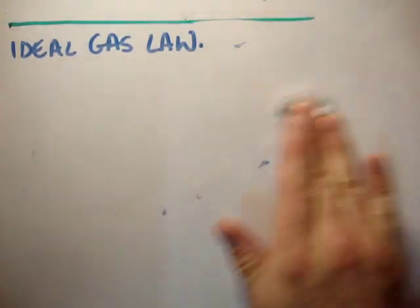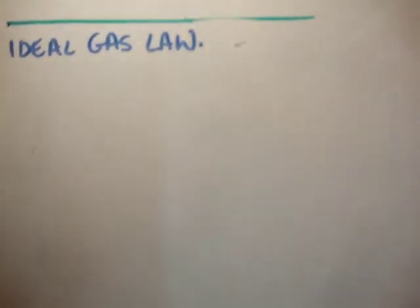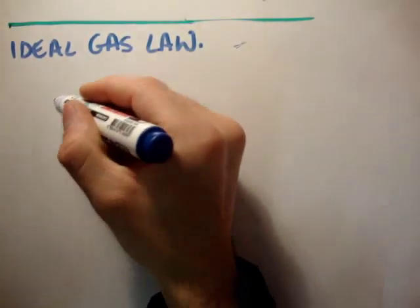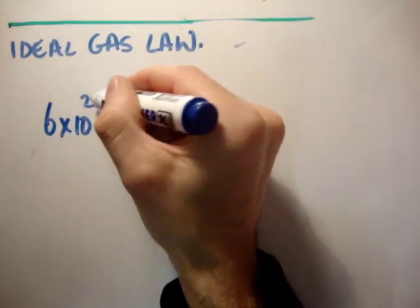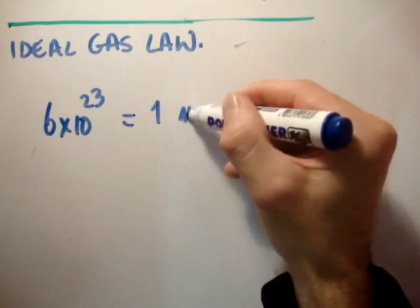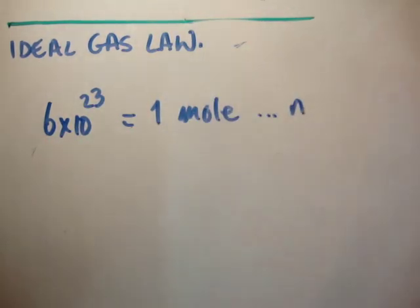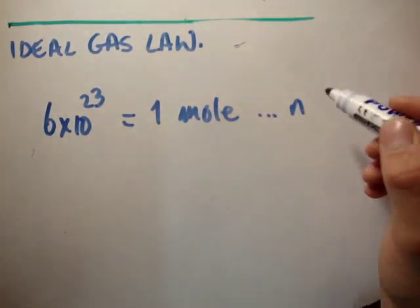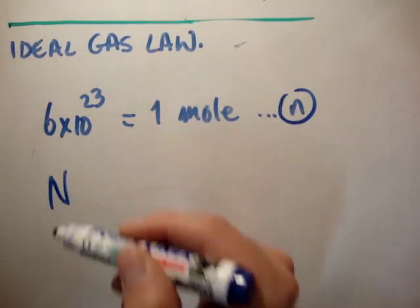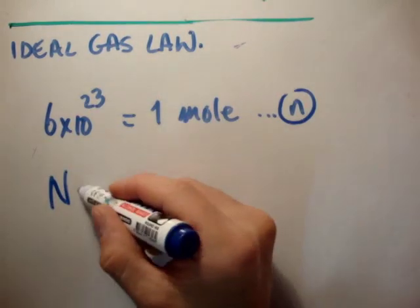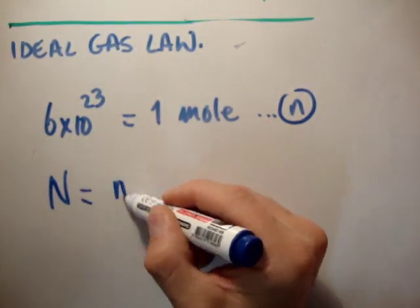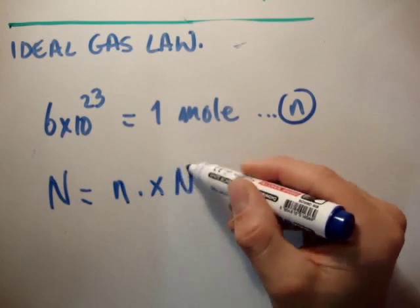We know that 6 times 10 to the 23 molecules is equal to 1 mole. n is the number of moles, so capital N is the total number of molecules, which is going to be small n, the number of moles, times Avogadro's number.